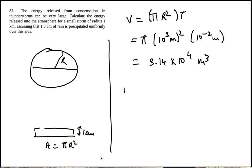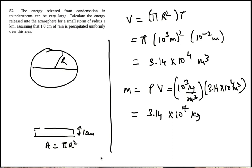So that's the mass of rain that fell. The mass of rain that fell is density of water times the volume of water. And this is 10 to the 3 kg per meter cubed times that, so 3.14 times 10 to the 7 kg.